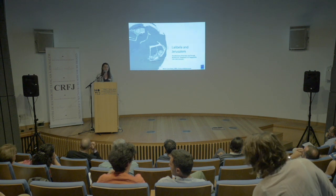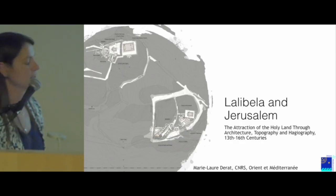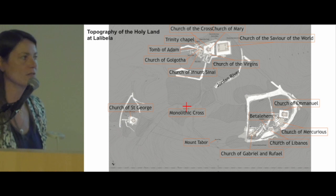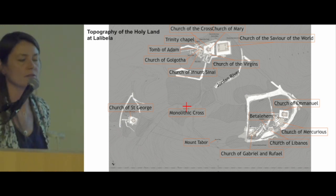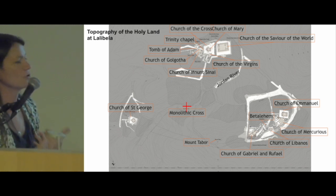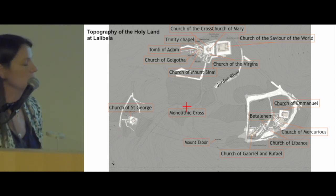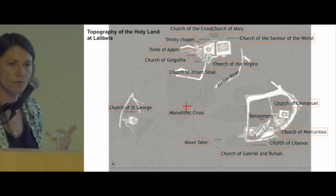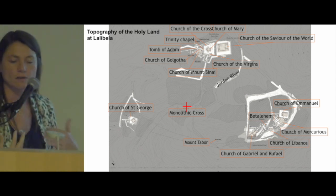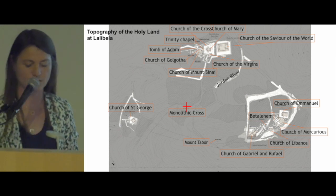We come back to the question of the relationship between Lalibela and Jerusalem, and I will try to answer this question — or in fact ask new questions, I'm sorry for that, but I think this is our task in a way. As François-Xavier already told you, there is a sort of inscription in the topography of Lalibela of the topography of the Holy Land. There are not only churches dedicated to the Holy Sepulchre or other places in the Holy Land, but also Mount Tabor and the river Jordan with a monolithic cross in the ridge of the river Jordan, commemorating the baptism of Christ. This topography is very important in Lalibela.